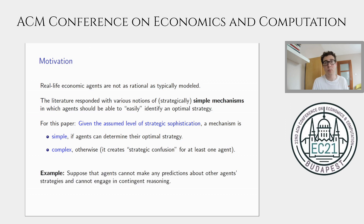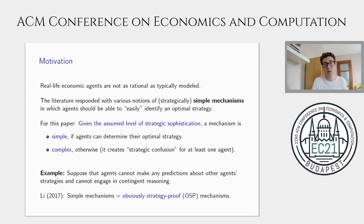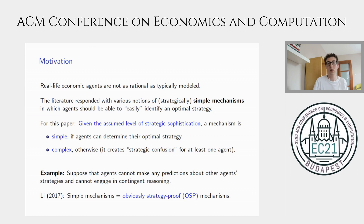To give you a concrete example, suppose that agents cannot make any predictions about other agents' strategies, and they also cannot engage in contingent reasoning. So in an OSP mechanism, even such unsophisticated agents can still determine their optimal strategy. But if you give them a non-OSP mechanism, then at least one of the agents will be strategically confused — they will not know what to do, or the designer will not be confident what the outcome of the mechanism will be.